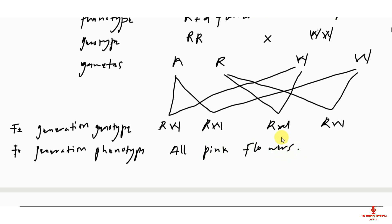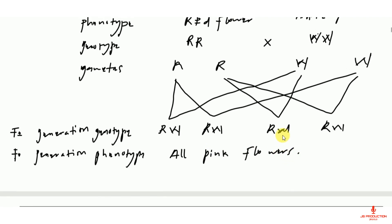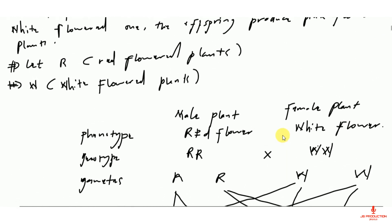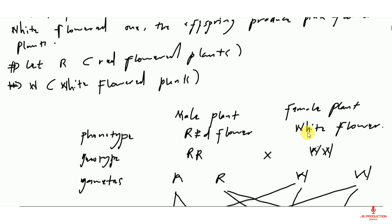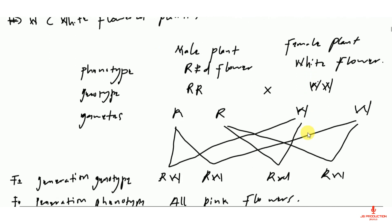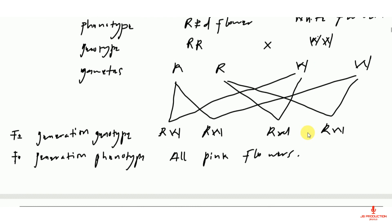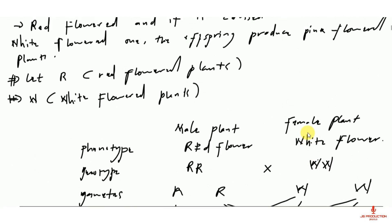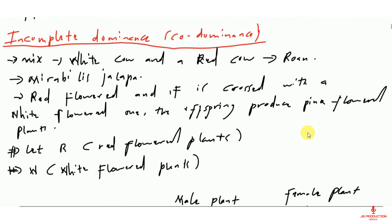From these crossings you can see that in our starting parents we had red and white, but the offspring produced are pink flowers. So this is an example of co-dominance or incomplete dominance.